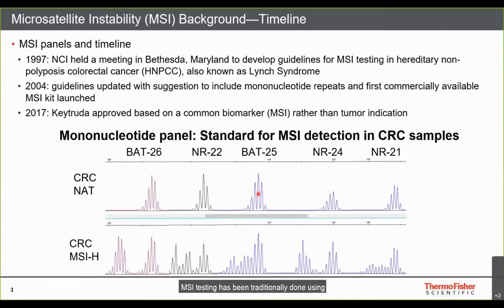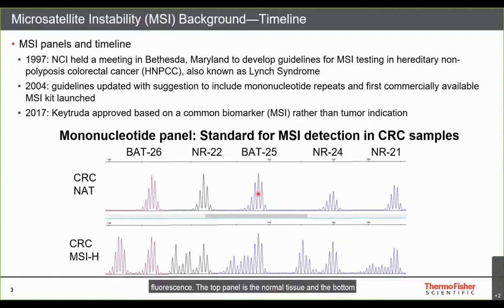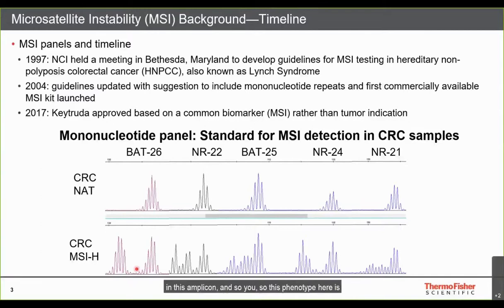MSI testing has traditionally been done using immunohistochemistry or through fluorescent PCR followed by fragment analysis on capillary electrophoresis instruments. A fragment analysis result of five mononucleotide markers shows amplicon size on the x-axis and fluorescence on the y-axis. In the normal tissue we see one set of peaks, while in the tumor sample we see the same peaks plus a second set of stutter peaks associated with a deletion — this phenotype is microsatellite instability.